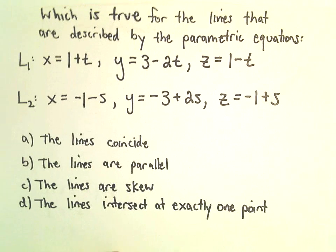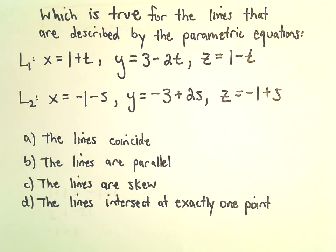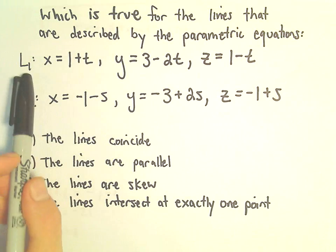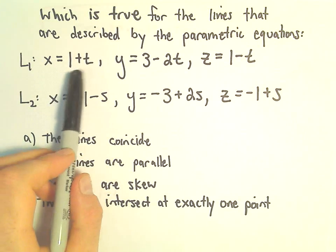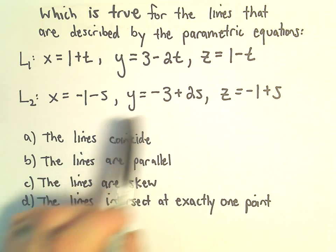In this video we've got a couple lines here that are described by parametric equations. So line one: x equals 1 plus t, y is 3 minus 2t, z equals 1 minus t.